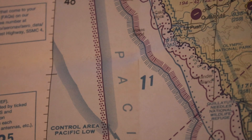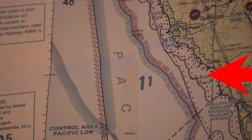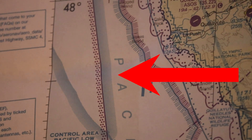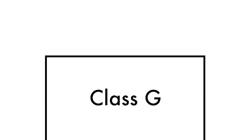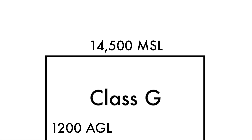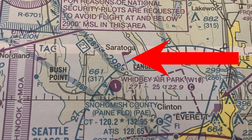For example, off the top of your head, do you know what this weird blue line is? It indicates that the Class Golf airspace goes higher than 1,200 feet AGL. In this case, 14,500 feet MSL.